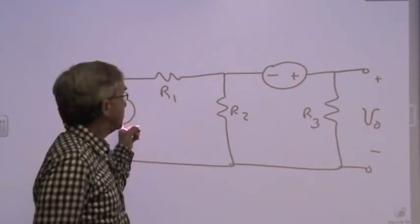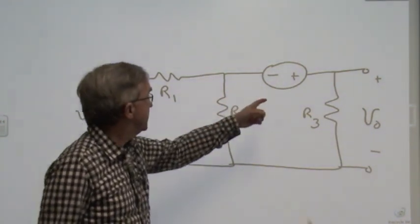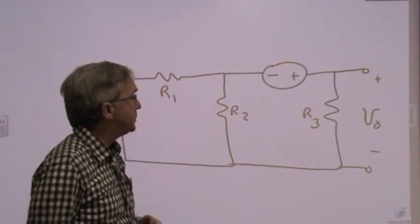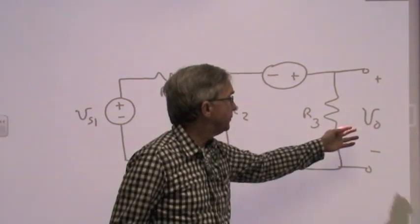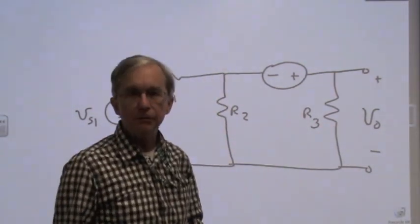We have on the board a circuit to examine. You'll see that it has two sources, Vs1 and Vs2, and three resistors. Suppose we wish to solve for the voltage across R3, which we are calling V0, Vout.